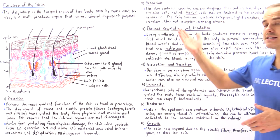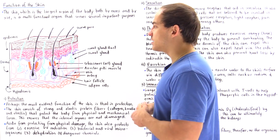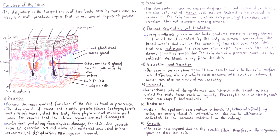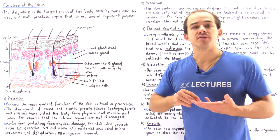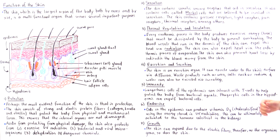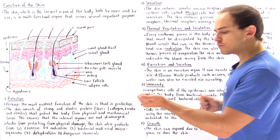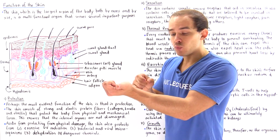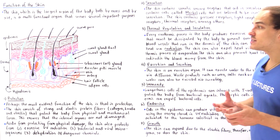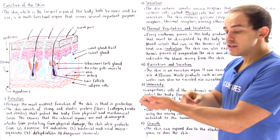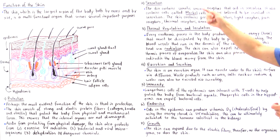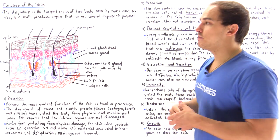The second function of the skin is sensation. On and in our skin we have a wide variety of sensory receptors, including pressure receptors, light receptors, thermal receptors (heat and cold), pain receptors, and many others. These receptors are connected to our nervous system, allowing us to sense touch, temperature, and pain. The epidermis also contains Merkel cells, which are believed to be involved in sensation.